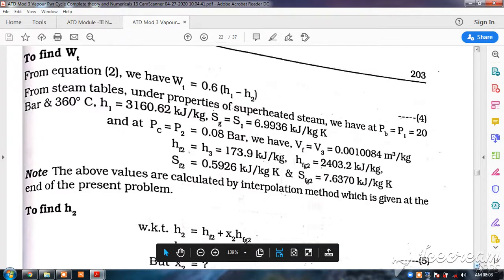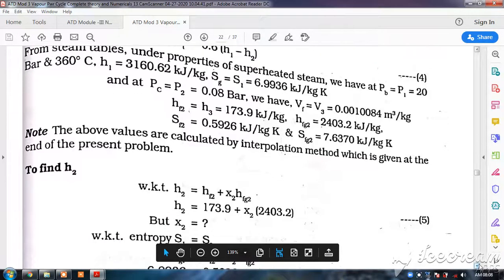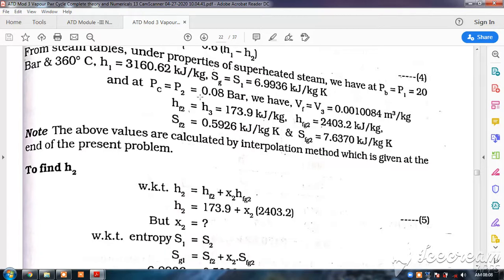Now coming to the condenser pressure, that is 0.08 bar, and specific volume we will find out 0.001. Now as this condenser pressure, you have to find out Hf2 and Hfg2 as well as